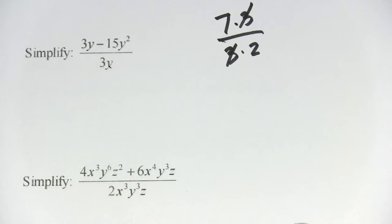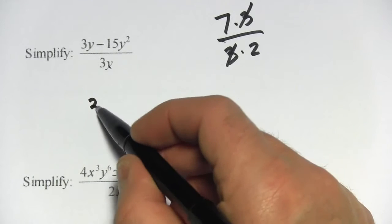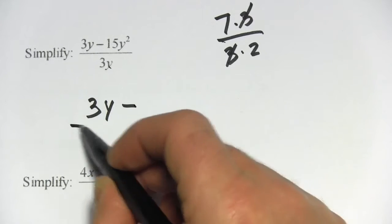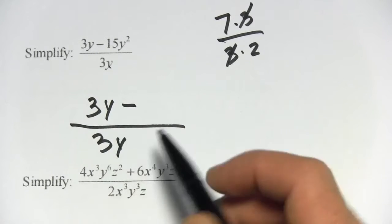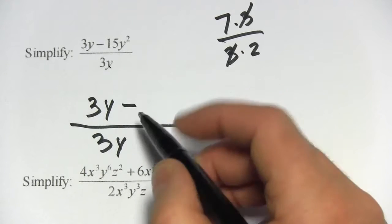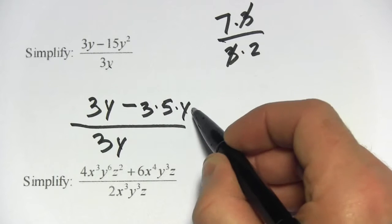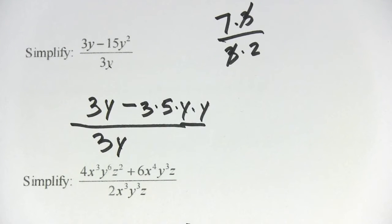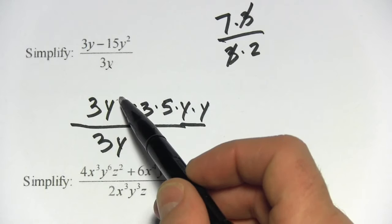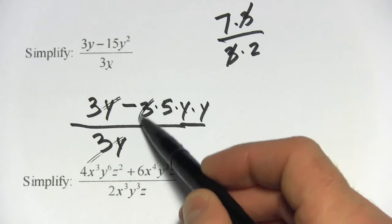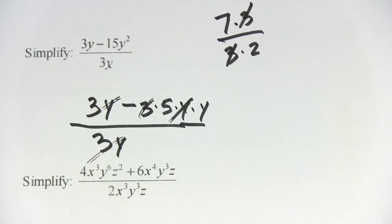I can rewrite 15y squared, so here's my 3y to start with up here and here's the 3y on the bottom. I can rewrite 15y squared as 3 times 5 times y times y. That really is the same thing. And now I have a 3y here that cancels with this and I have a 3y here that cancels.